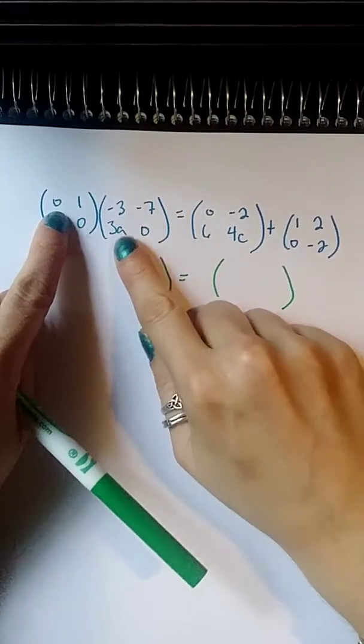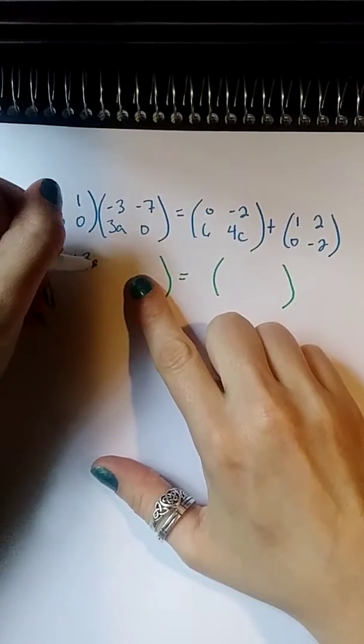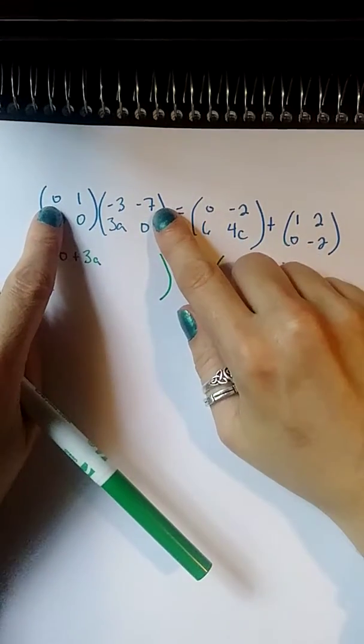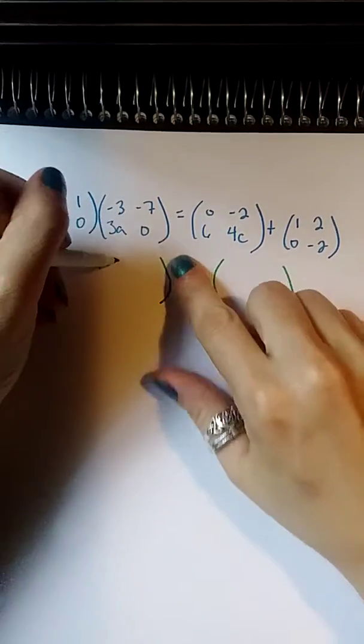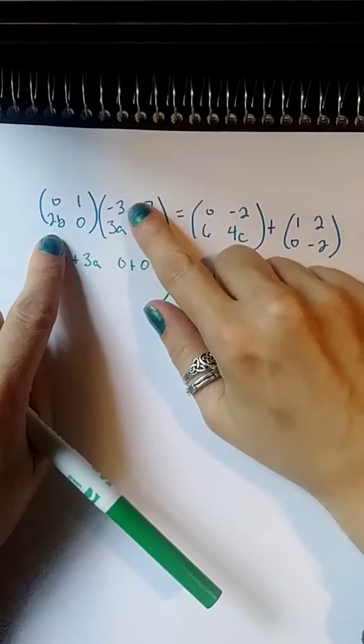0 times -3 plus 1 times 3a. So I have 0 plus 3a. That's my first element. Then I move to my next column. 0 times -7 plus 1 times 0. That's just 0 plus 0. I'm out of columns, so I move to my next row and begin again.